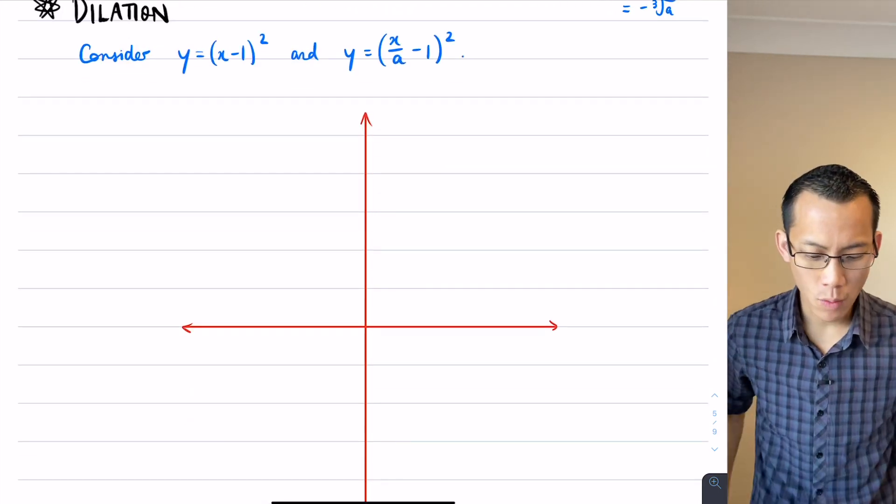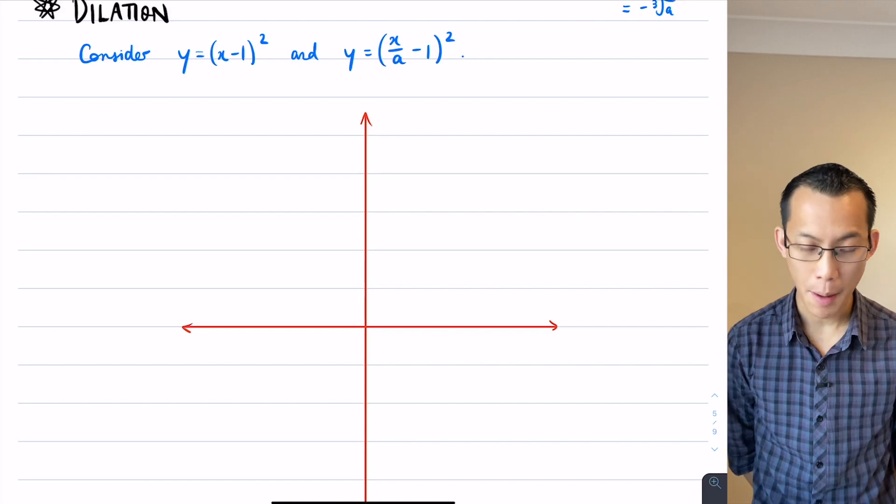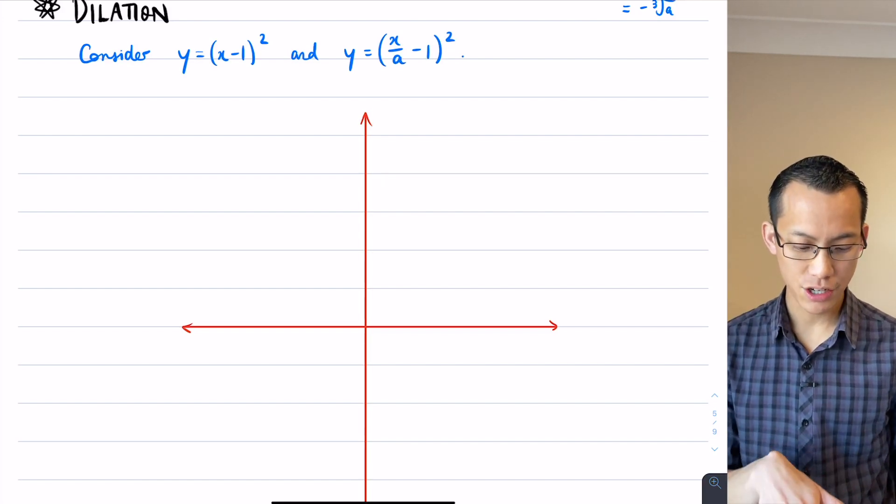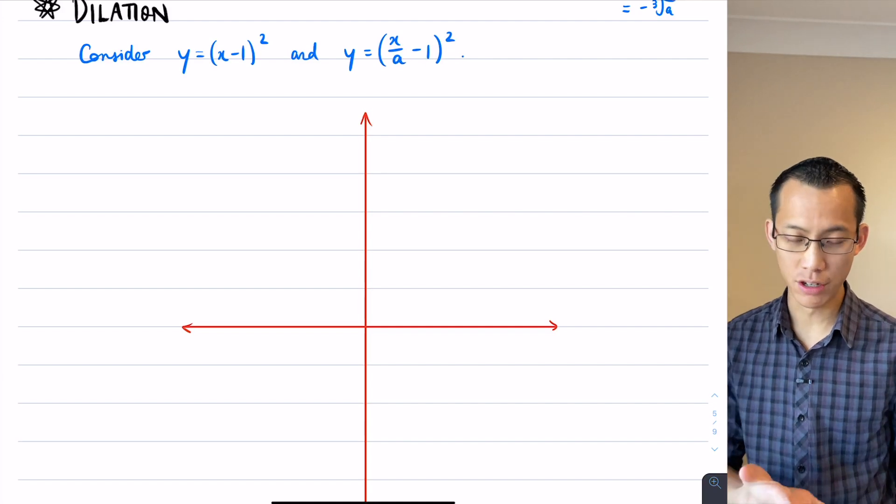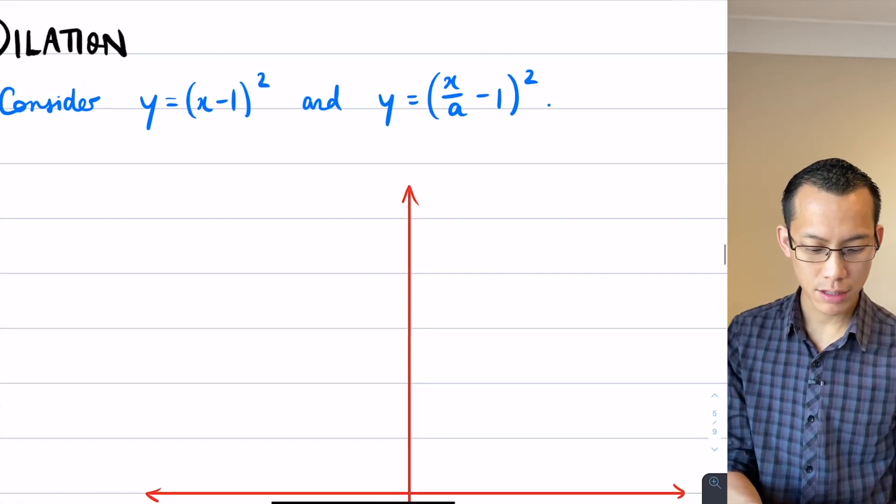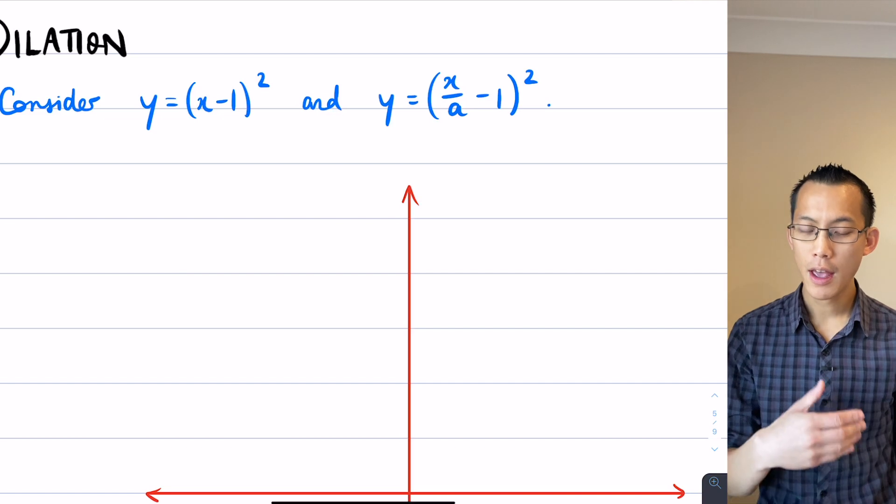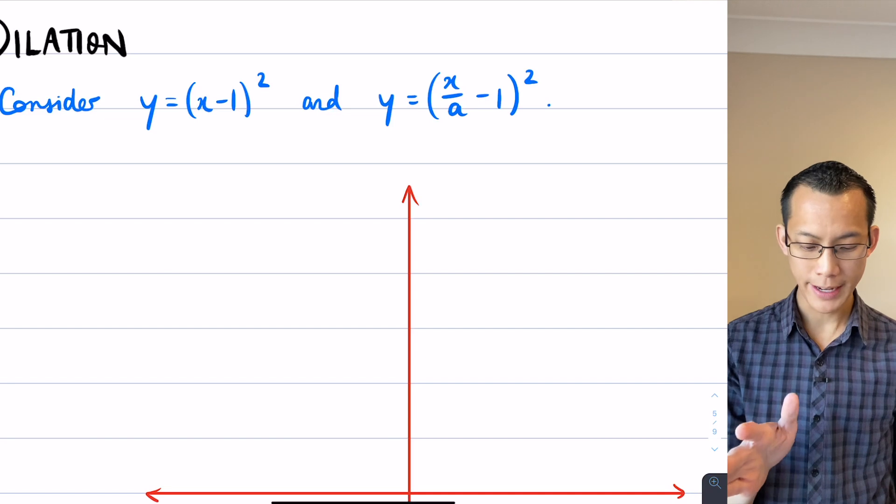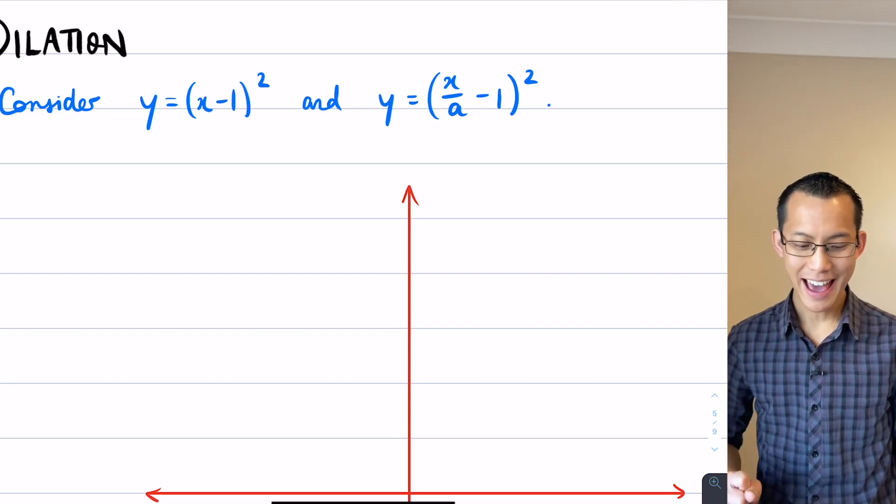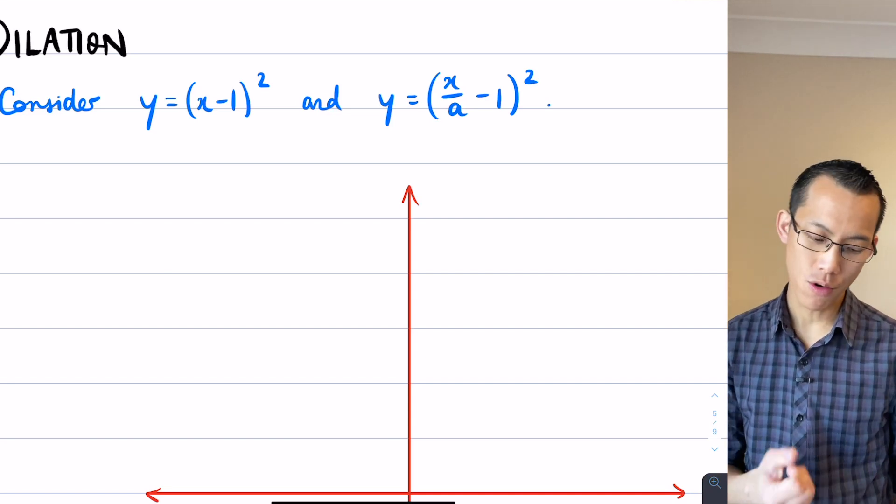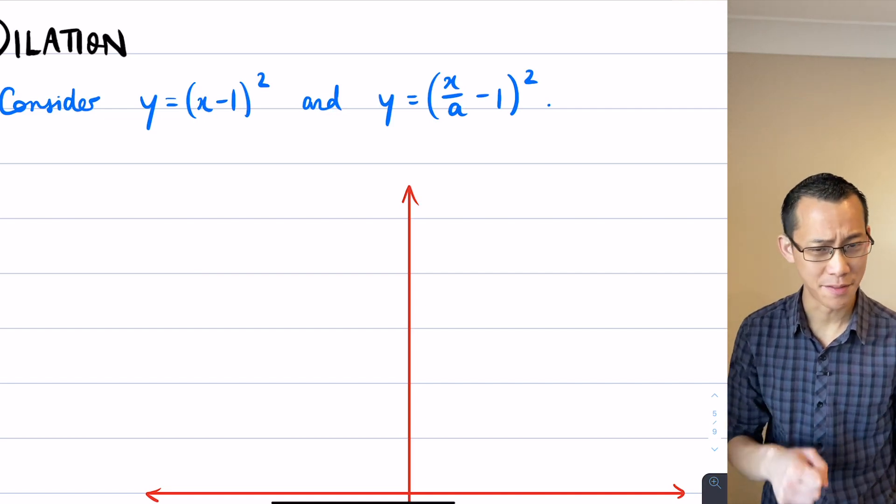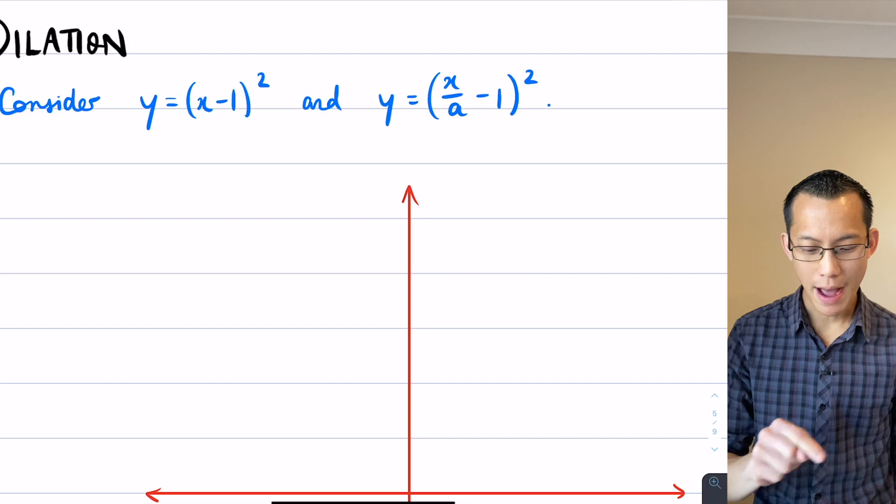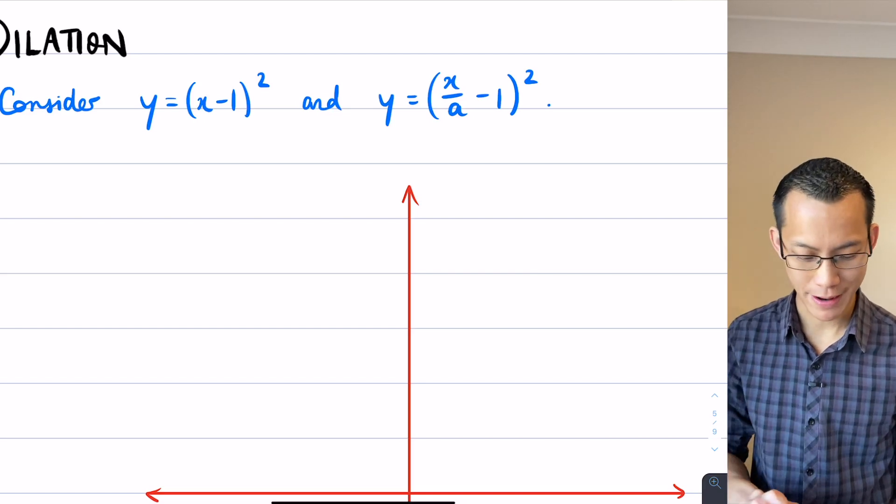So have a look at this guy. Now what I've got provided for you here is a big set of axes we're going to draw in here in a second but just like with our translation, we're going to explore this with technology first. So I'm showing you these two equations so that you can take the time to put them into Desmos as I've written them here. y equals (x-1)² is a parabola and it's been moved over one unit to the right, and then you've got this other one over here y equals (x/a - 1)².